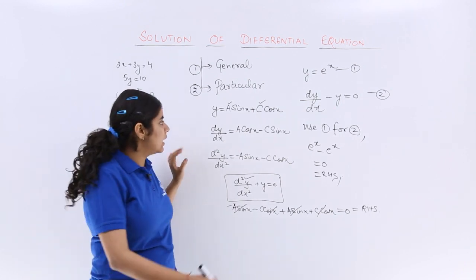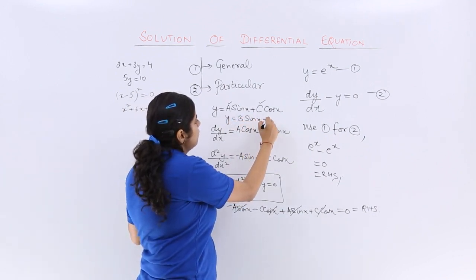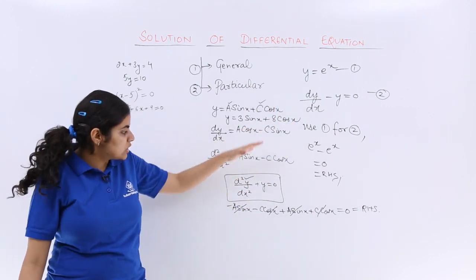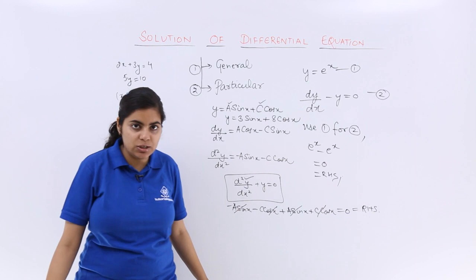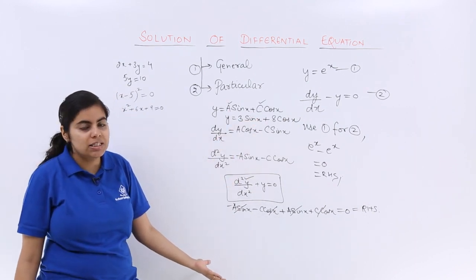But if I say that this time it is y equals 3 sin x plus 8 cos x, and then I solve it again, I will get 0 because differentiation is irrespective of the value of the constants.